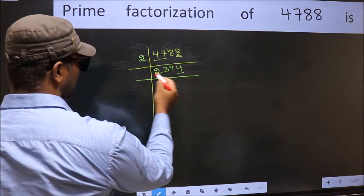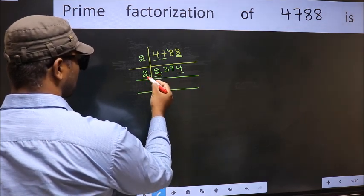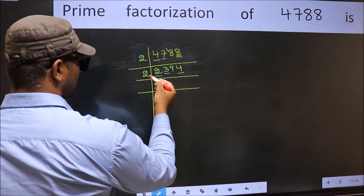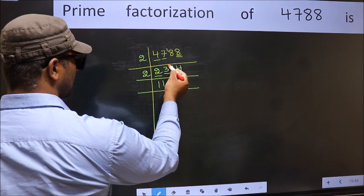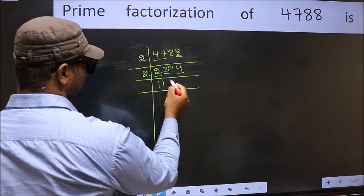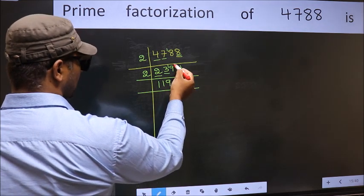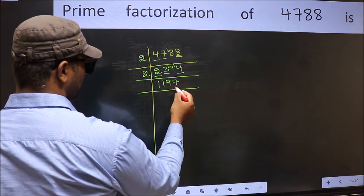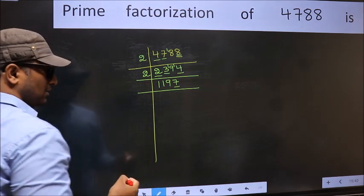Now the last digit 4 is even, so take 2. First number 2 — when do we get 2 in the 2 table? 2 ones are 2. The other number 3 — a number close to 3 in the 2 table is 2 (2 ones). 3 minus 2 is 1, carried forward: 19. A number close to 19 in the 2 table is 18 (2 nines). 19 minus 18 is 1, carried forward: 14. When do we get 14 in the 2 table? 2 sevens are 14. Now the last digit 7 is not even, so not divisible by 2.